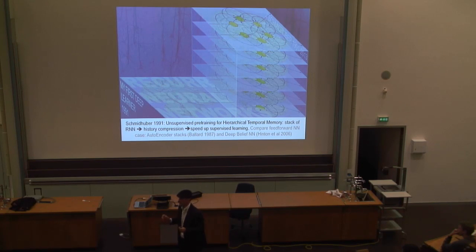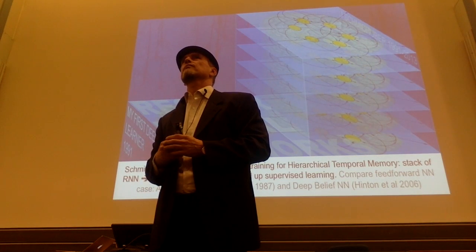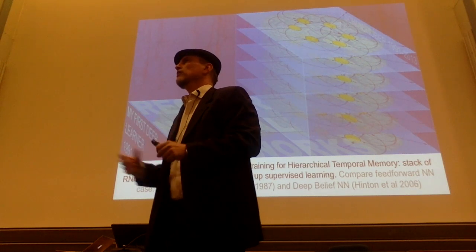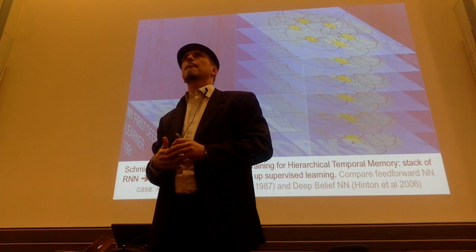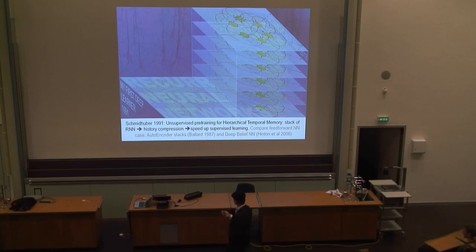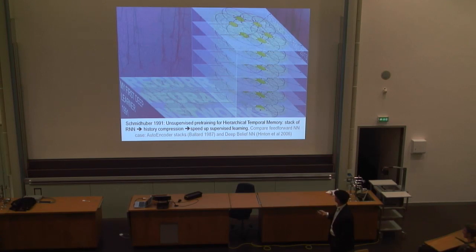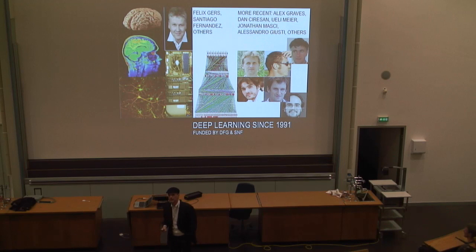The top level has a rather compact description of the entire sequence, and you can easily learn from that what the supervised classification of the sequence is. With this, we could suddenly solve deep learning tasks of depth 1,200 — tasks that were not learnable before. This was the first recurrent deep learner that really worked, and it started this whole business. I'm thankful to the German Science Foundation and the Swiss National Fund for funding this work in the 90s.